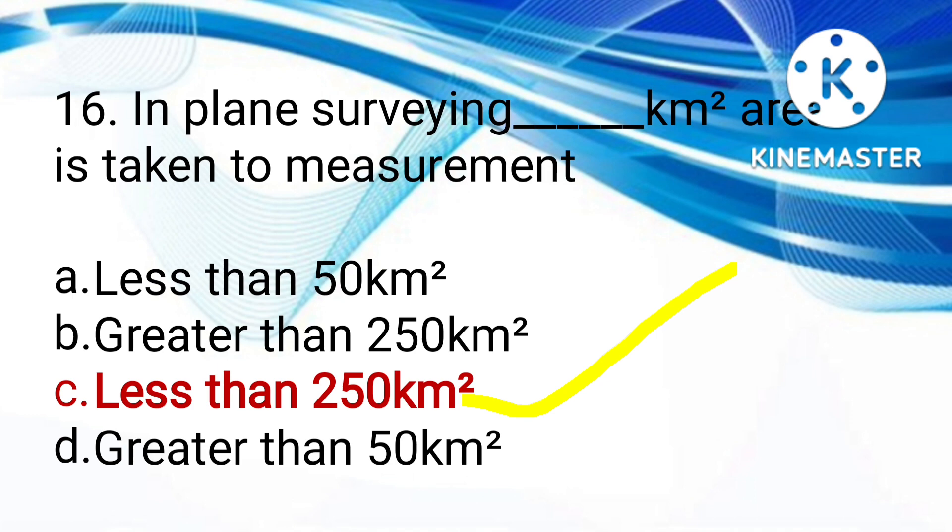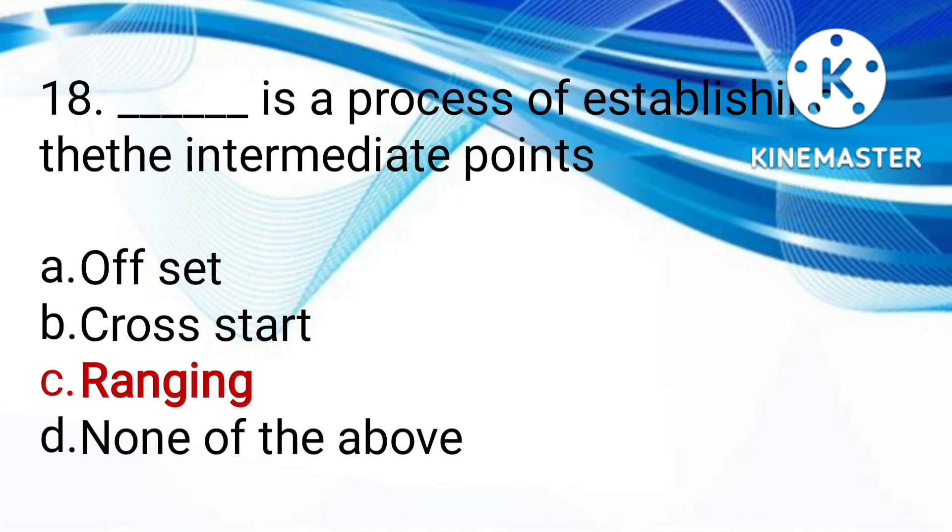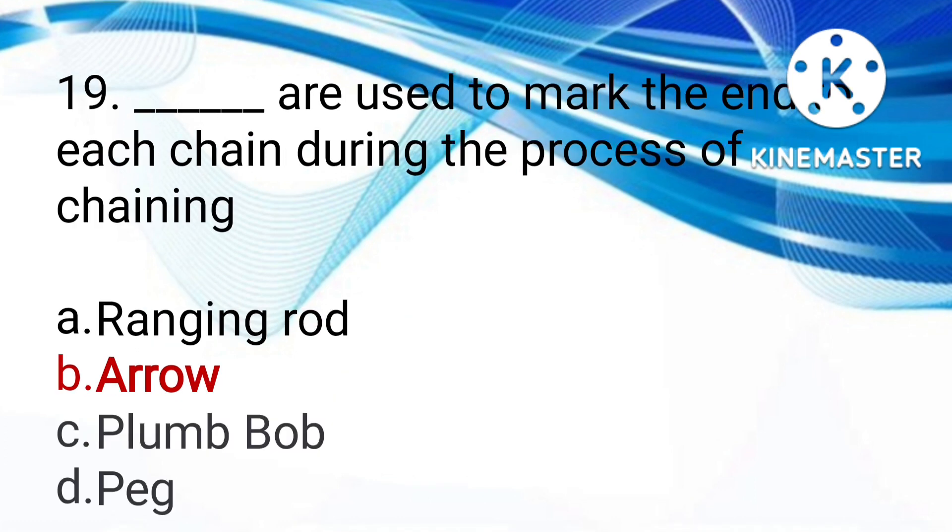GPS full form: global plane surveying, geodetic and photographic surveying, geodetic and plane surveying, or global positioning surveying. GPS full form is Global Positioning System. Which is a process of establishing the intermediate points - offset, cross start, ranging, or none. The answer is ranging.